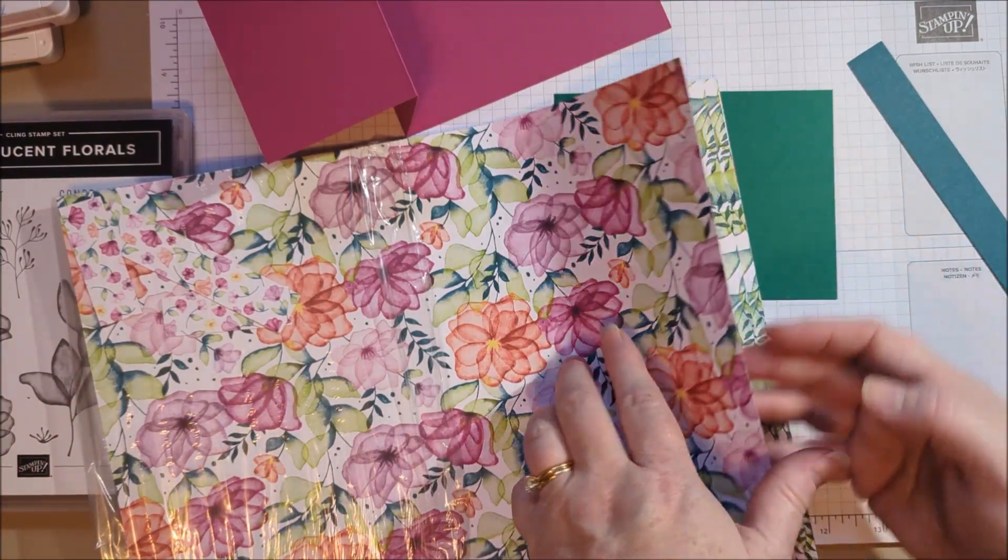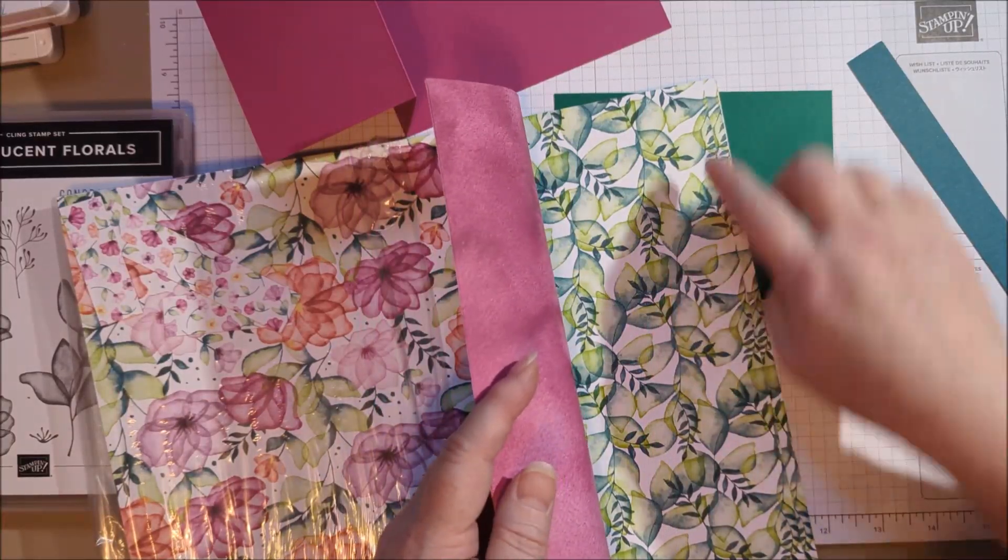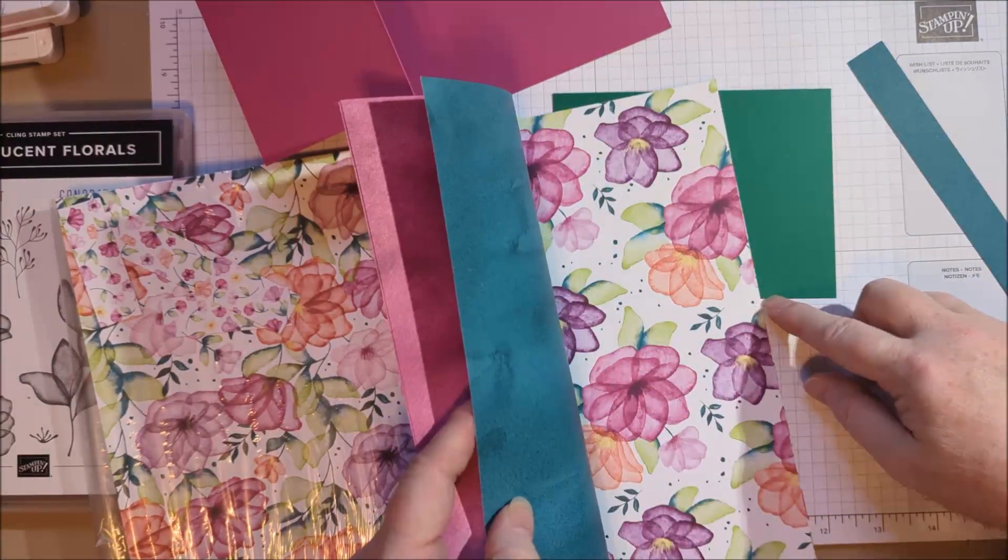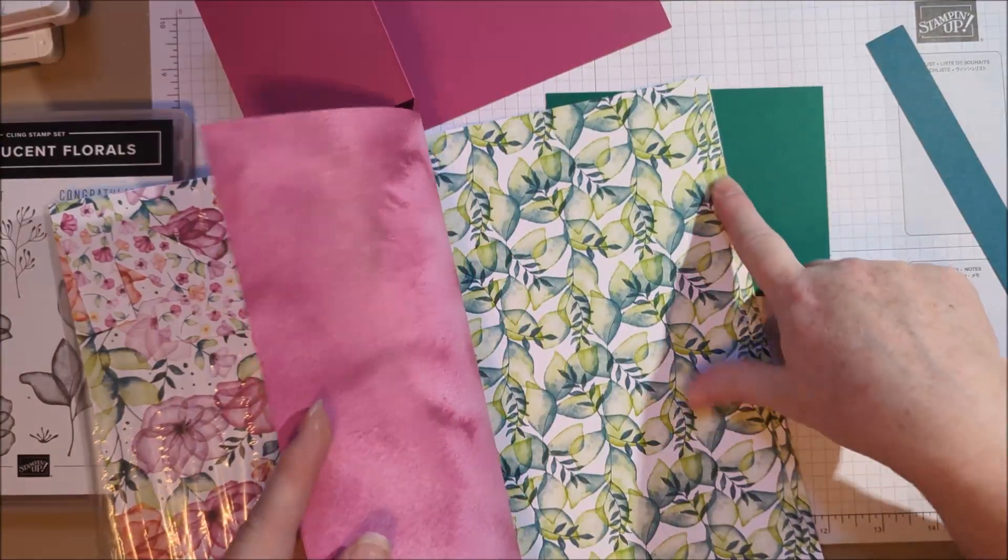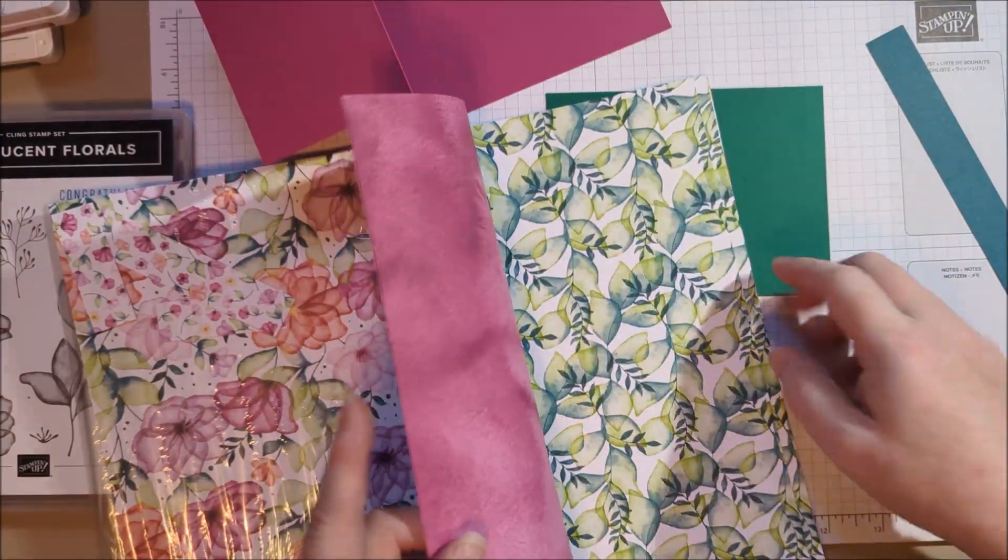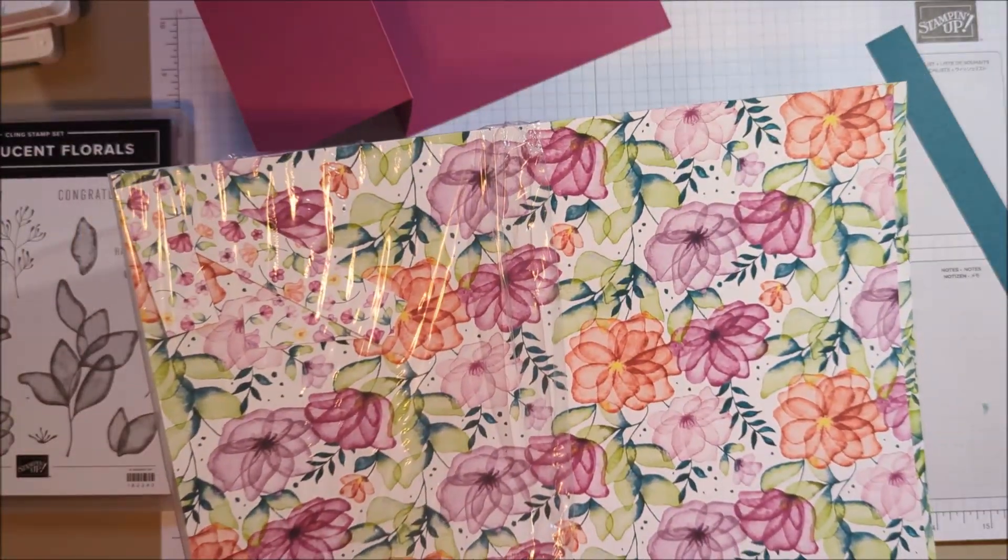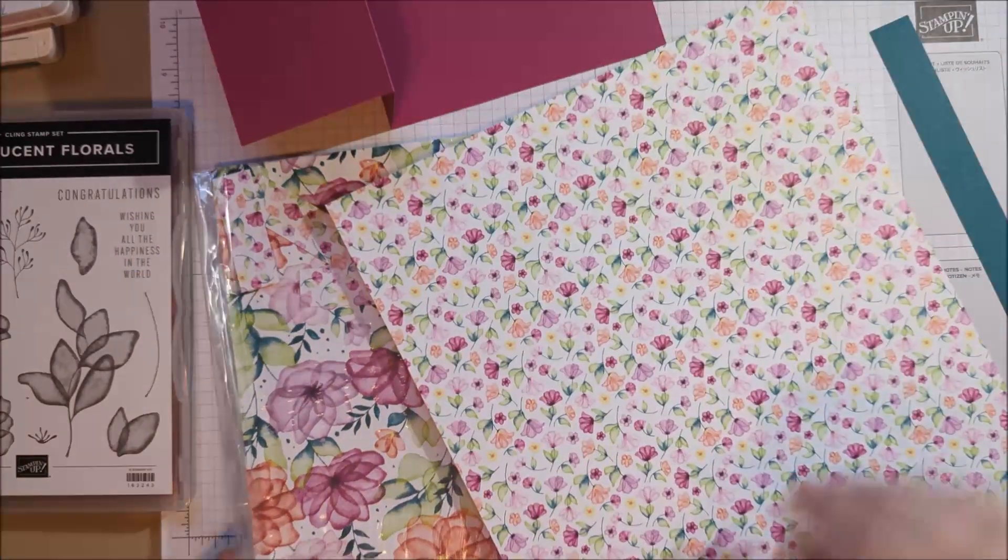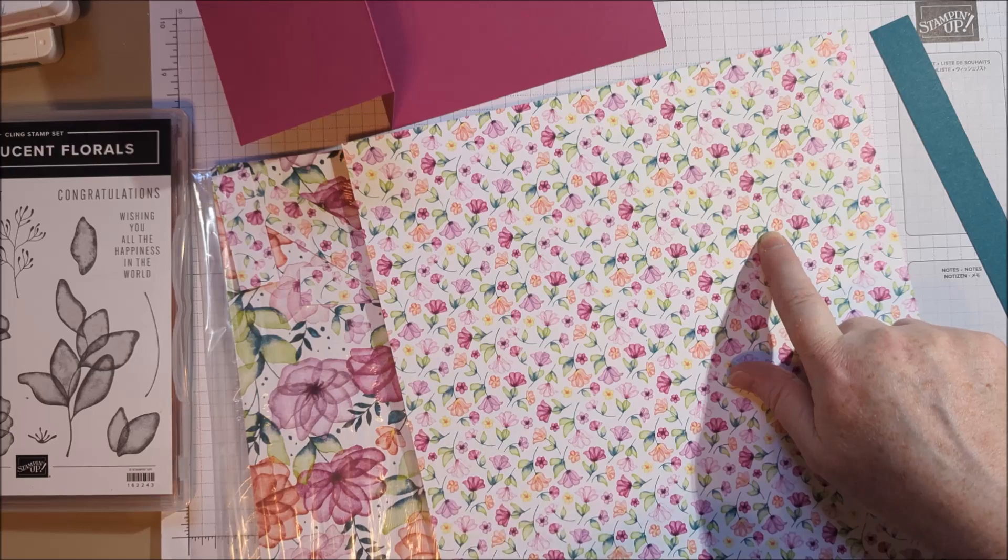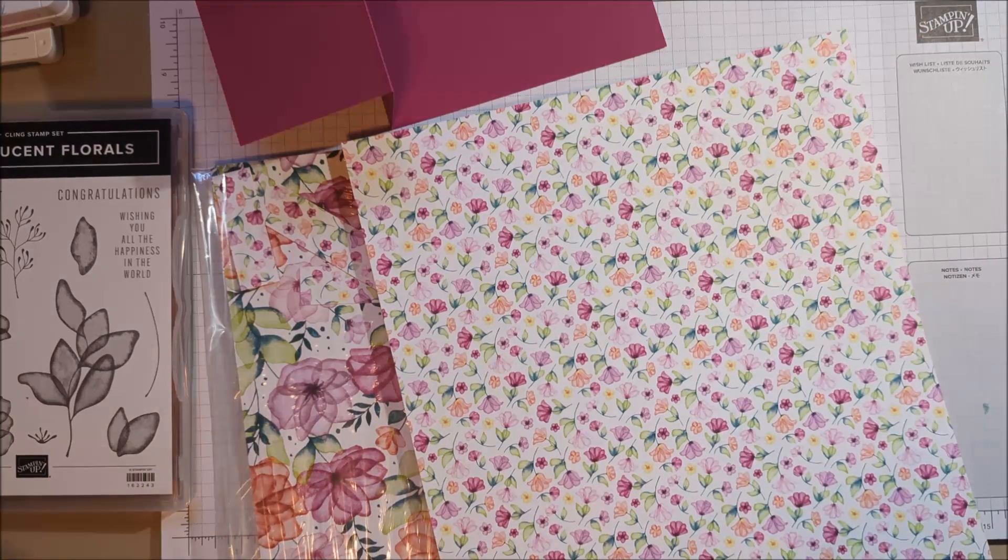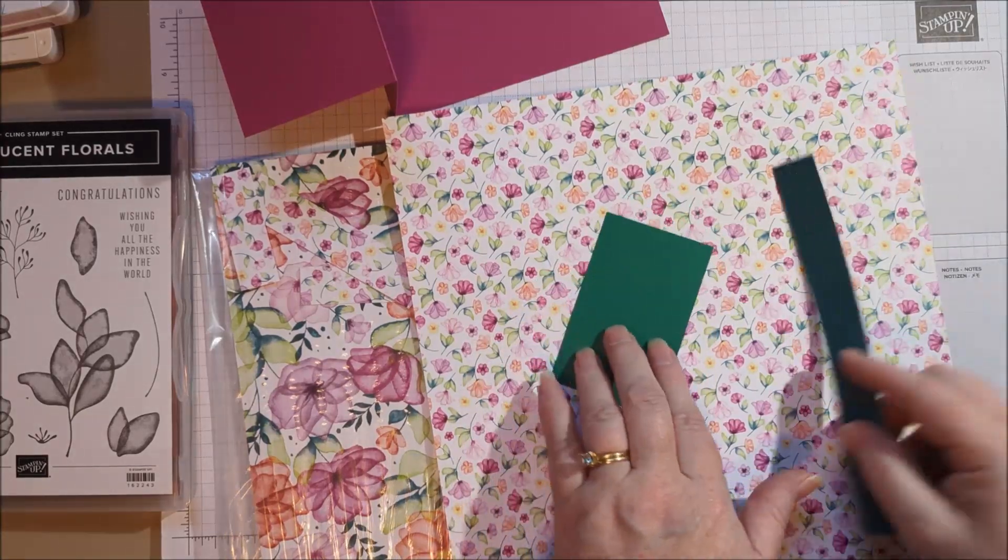However, when you go into some of these other patterns, because of the layering and that parakeet party brings in some yellows and the tiny florals, lots of greens are showing up in here. So shaded spruce is just fine. And the paper that we're using is this tiny floral. And because of that yellow in that parakeet party, the shaded spruce looks great.